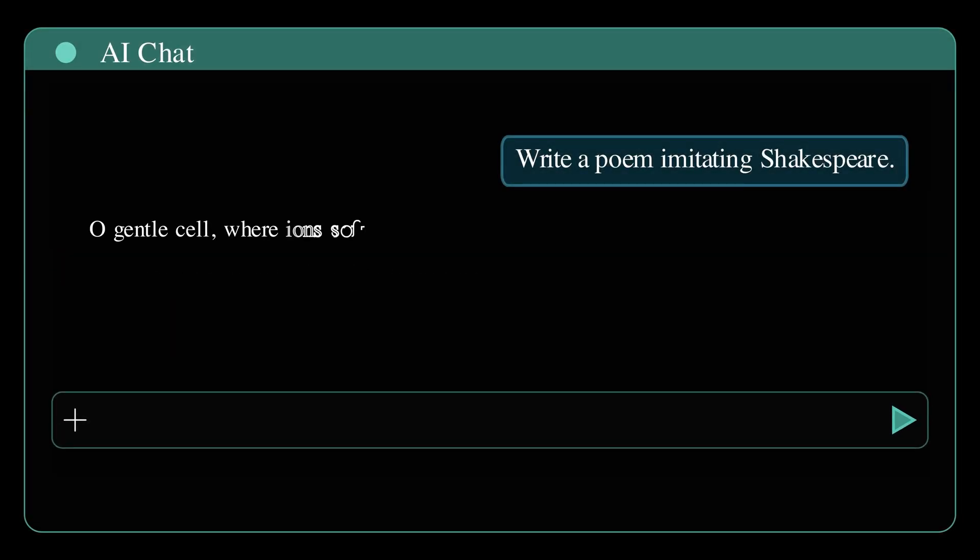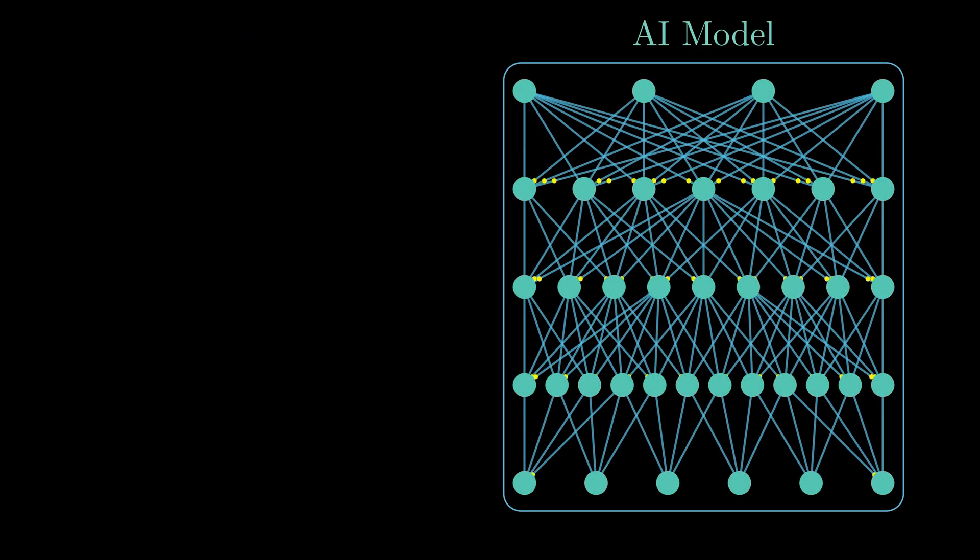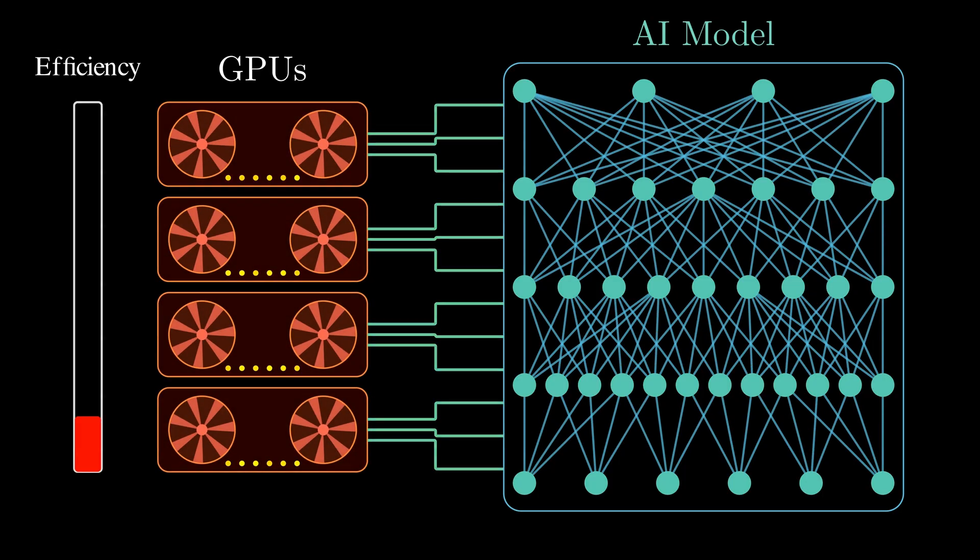Behind every intelligent response from AI models like GPT, Gemini, DeepSeek, and many others lies a mountain of computation, and it all runs on huge power-hungry GPUs that cost millions of dollars. But what if there was a better way?